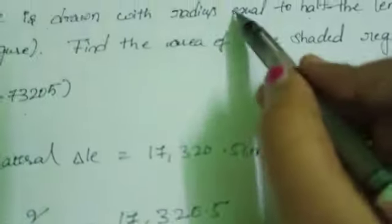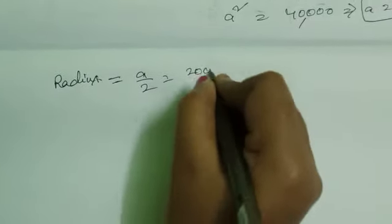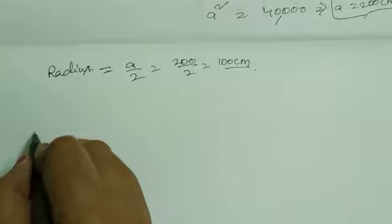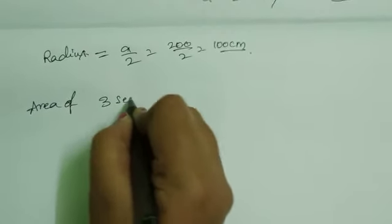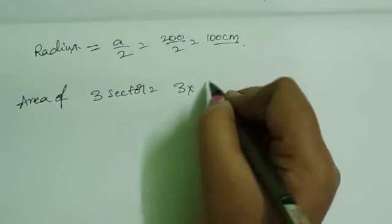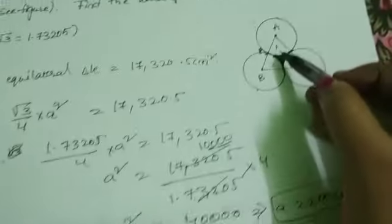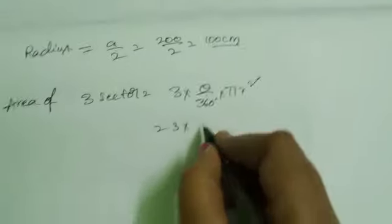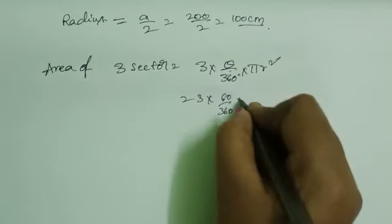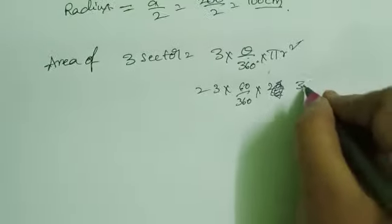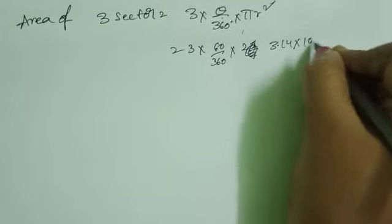Now, the radius equals half the length of each side of the triangle, so radius = A / 2 = 200 / 2 = 100 cm. Next, area of 3 sectors = 3 × (θ / 360°) × π r². Each angle of an equilateral triangle equals 60°, so θ = 60°. Using π = 3.14 and r = 100 cm.